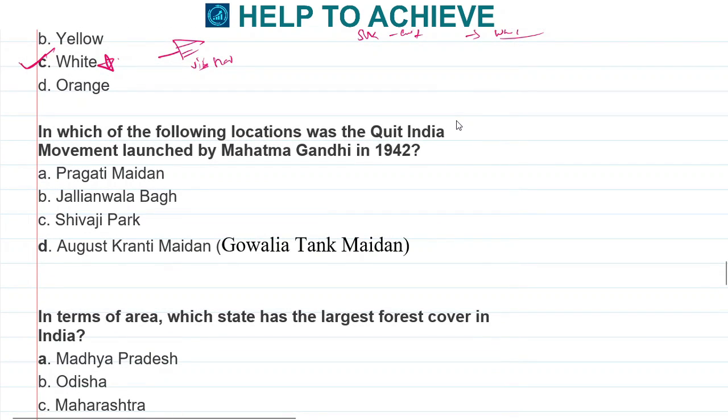In which of the following locations was the Quit India Movement launched by Mahatma Gandhi in 1942? We all know the famous slogan 'Do or Die' which was given in this Quit India Movement by Mahatma Gandhi in the year 1942. This call he gave in Kranti Maidan, also known as August Kranti Maidan, and the other name is Gowalia Tank Maidan.